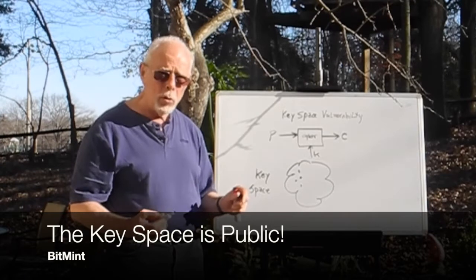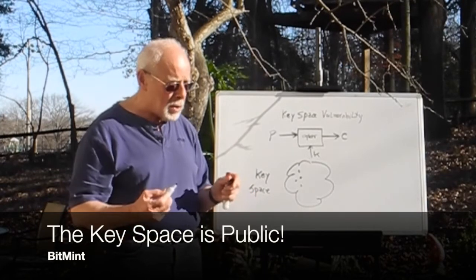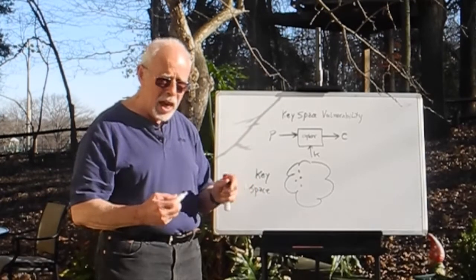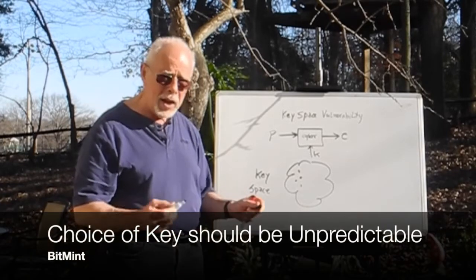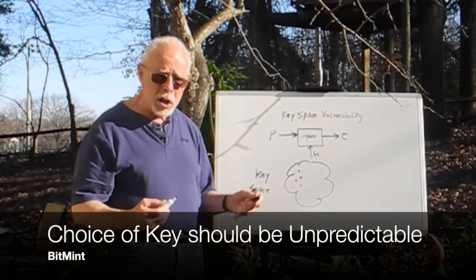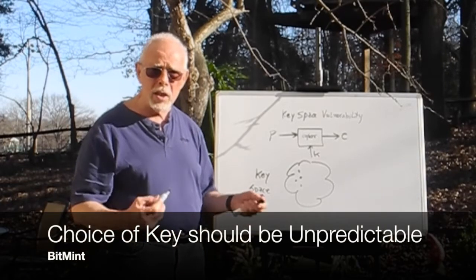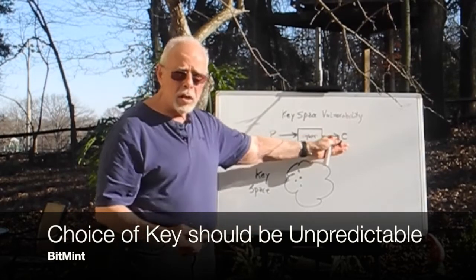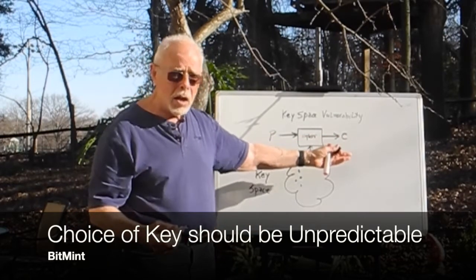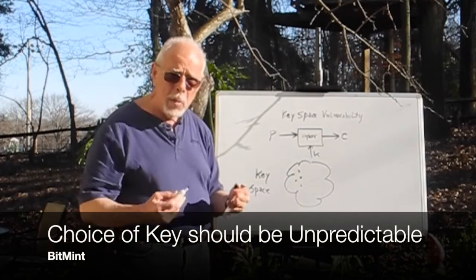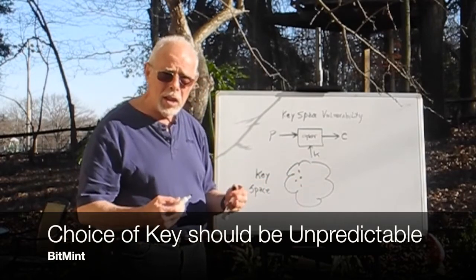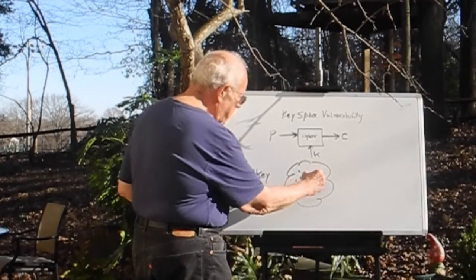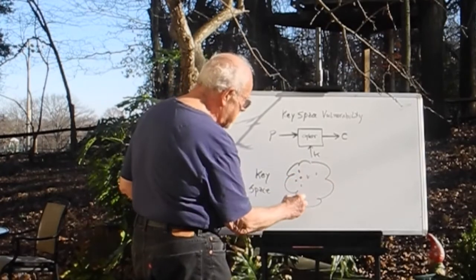Very important — randomly. Because if we select the key in any other way, through any other pattern, this pattern can be discovered. And the key can be discovered and the ciphertext cracked. So the fundamental requirement is that the selection of the key from the key space will be random.